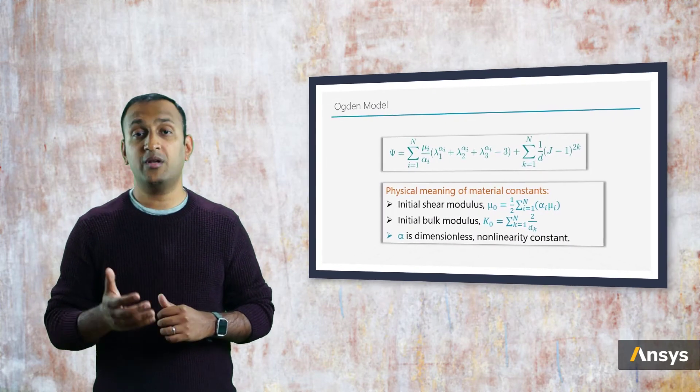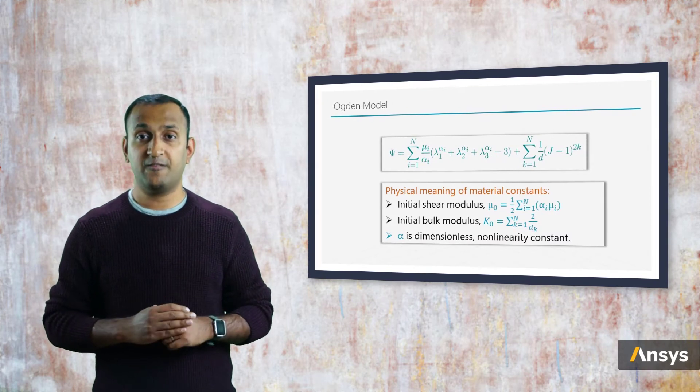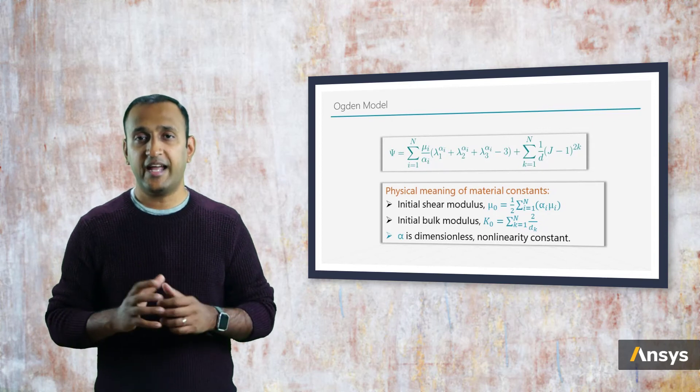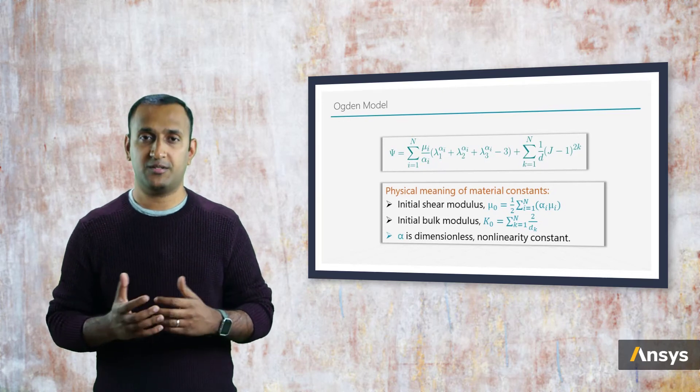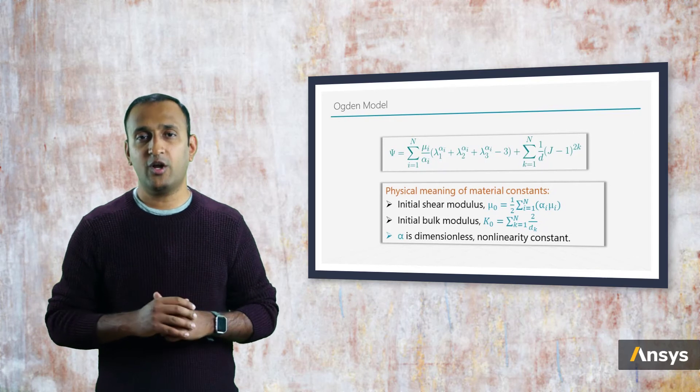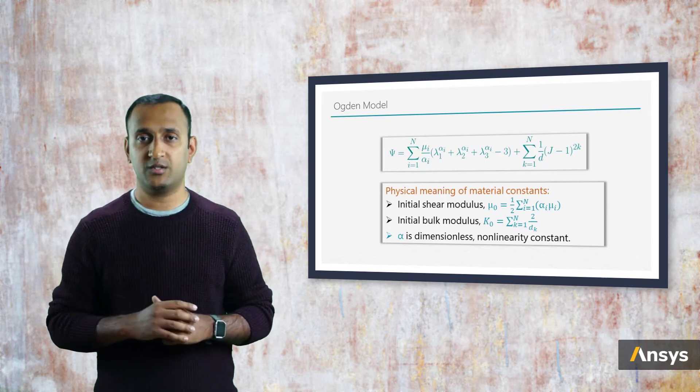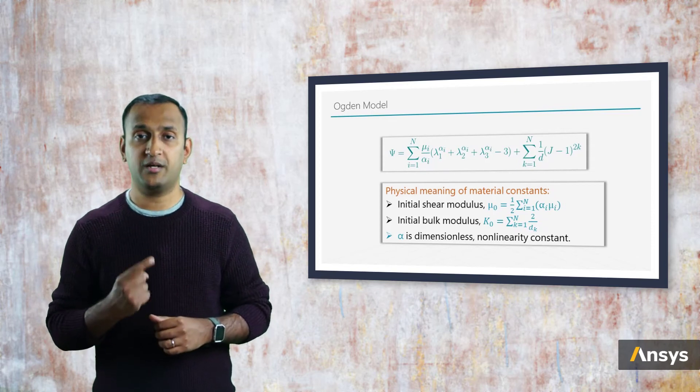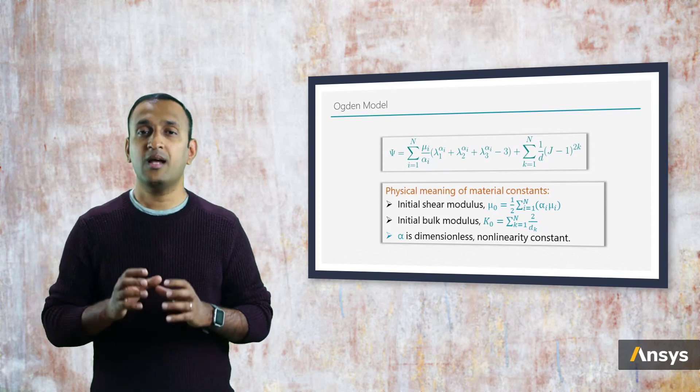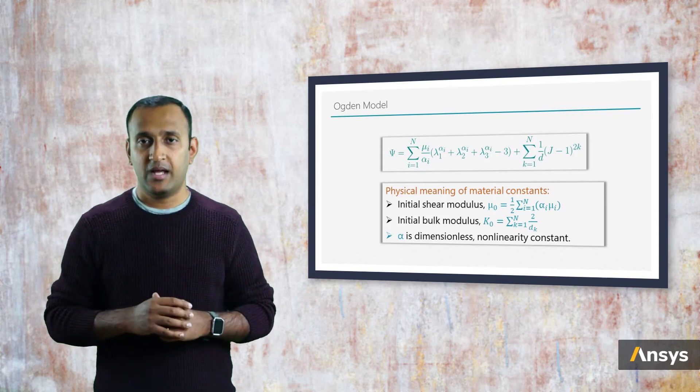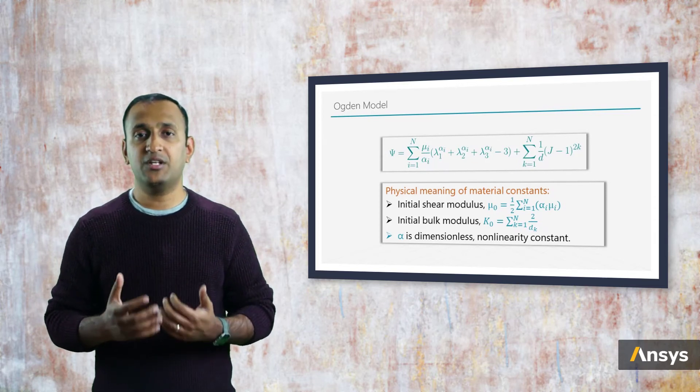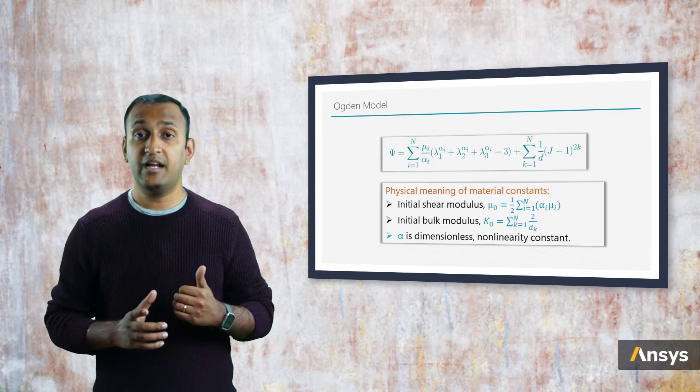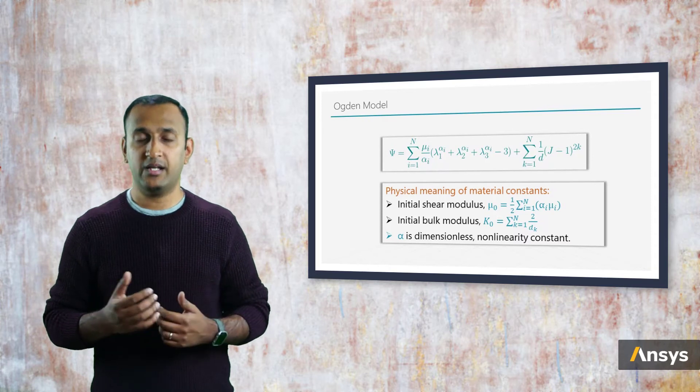The Ogden model is another commonly used form, and this one is defined using principal stretches. It can be formulated by one or more terms. Usually, the nonlinearity of the model increases as we use more terms. The deviatoric component of the model has two material constants per term, and the volumetric term uses one constant per term. The initial shear modulus of the material is nothing but the sum of the material constants mu from each term, and alpha is just a dimensionless nonlinearity term. D, once again, is nothing but 2 by initial bulk modulus.